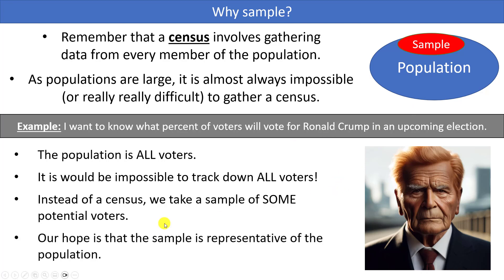The term they typically use is that we want our sample to be representative of the population. Basically that means it's going to be the same as the entire population, but a smaller version. So if there are a million voters and 50% are going to vote for Ronald Crump, we would also hope that 50% of the voters in our sample would vote for Ronald Crump. That's what it means to have a representative sample.